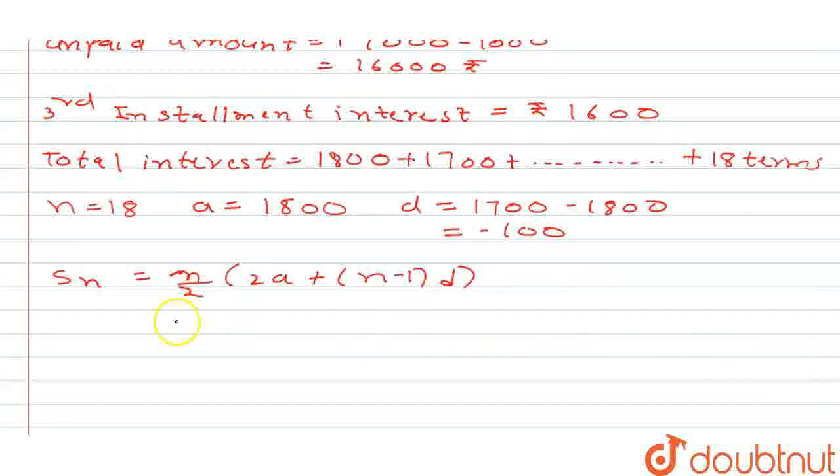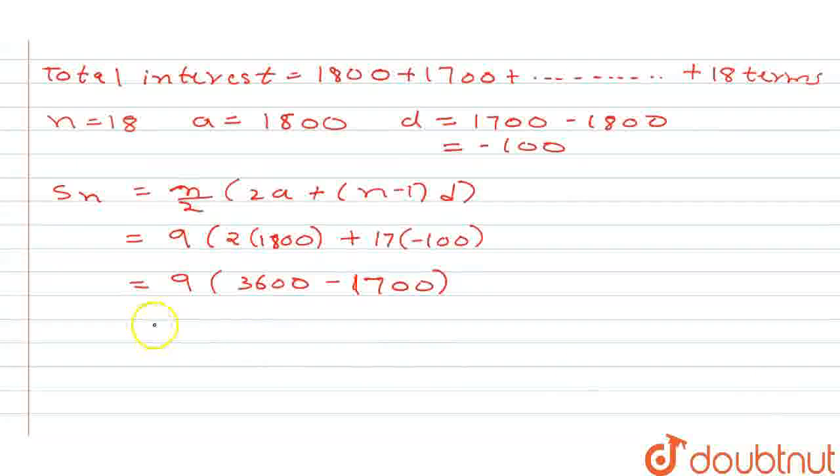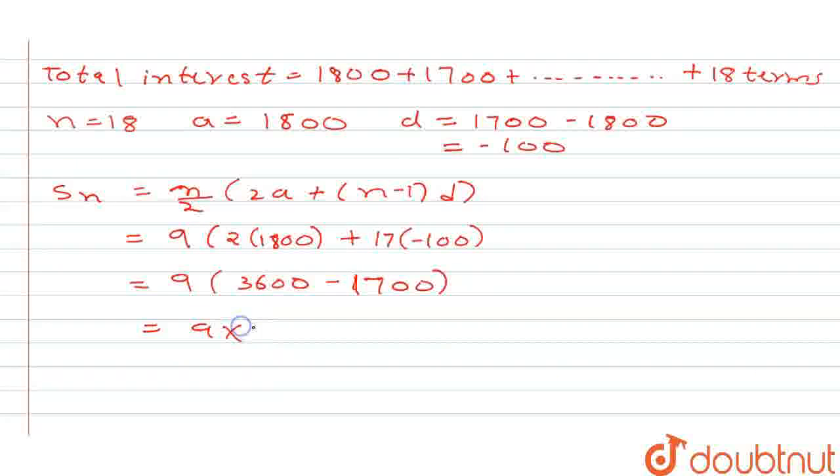So it is going to give us N is 18, 18 by 2 is 9 into 2 into 1,800 plus N minus 1, that is 18 minus 1 is 17 into minus 100. So it gives us 9 into 3,600 minus 1,700. This gives us 9 into 1,900 which equals 17,100 rupees.